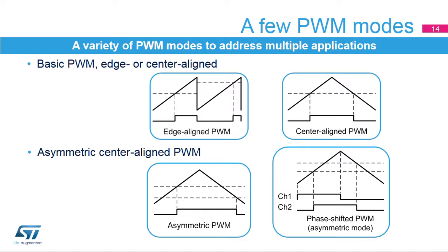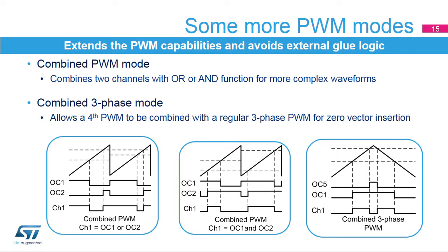In this case, the timer provides two PWM signals with identical frequency, 50% duty cycle, and a phase shift varying from 0 to 180 degrees. The combined PWM modes allow a logic combination of two PWM signals generated by adjacent channels, output compare 1 and 2, or output compare 3 and 4. The PWMs can be ORed or ANDed to create complex waveforms, typically allowing two periodic pulses generated with any pulse width and any phase relationship value.